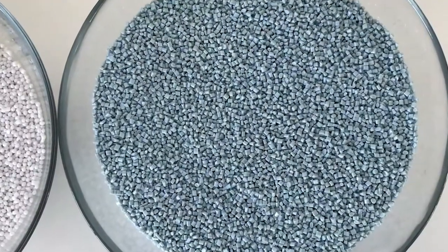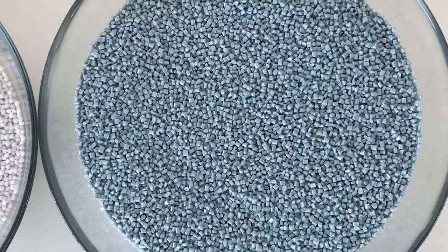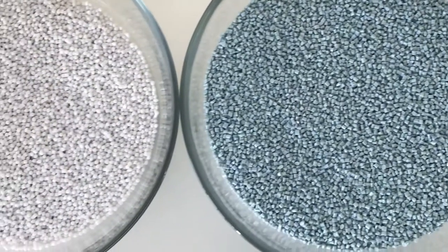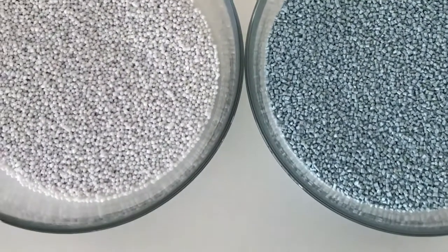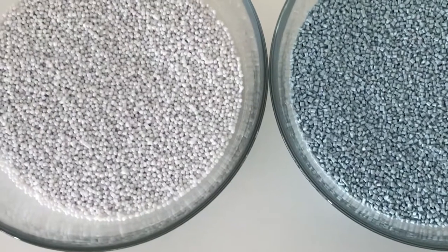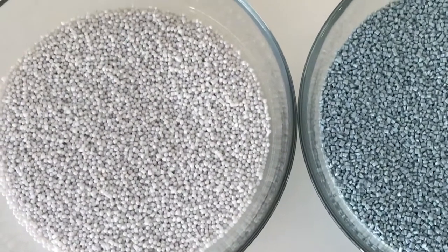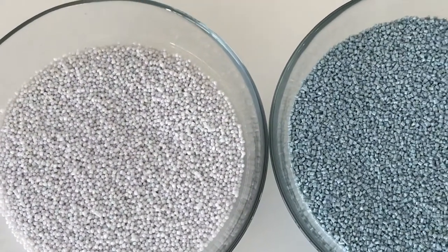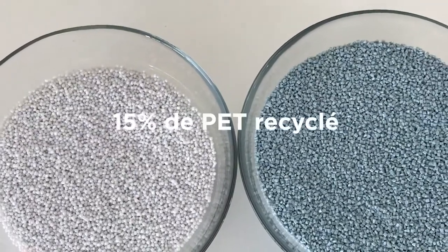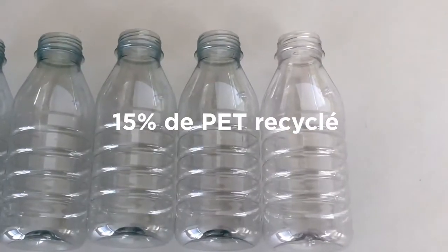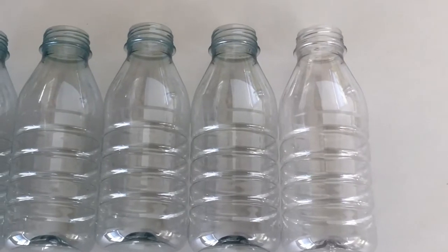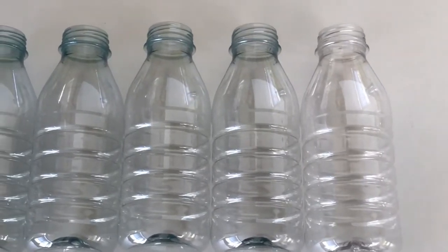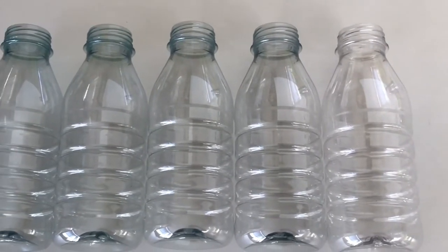Recycled pellets are first mixed with virgin PET pellets coming from oil transformation. Each bottler chooses the mix between virgin and recycled pellets, between 0 and 100%. In France it is an average of 15% of recycled PET that is used in all PET bottles. For Coca-Cola in France it was an average of 28% in 2019.